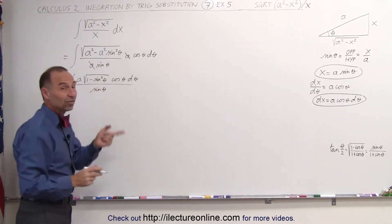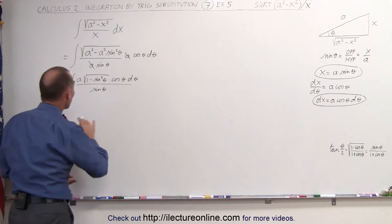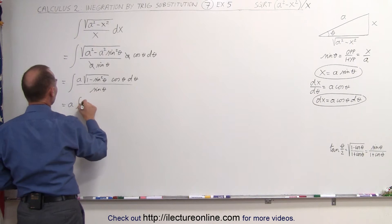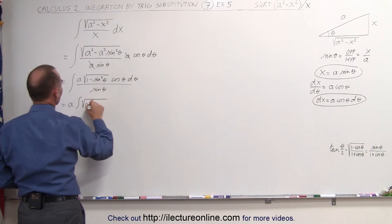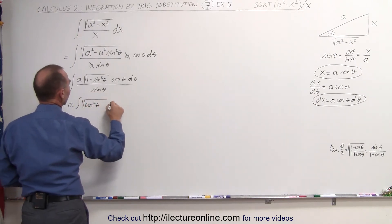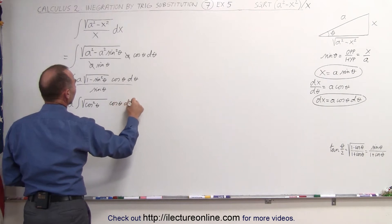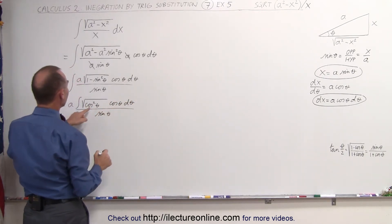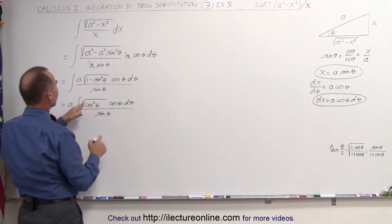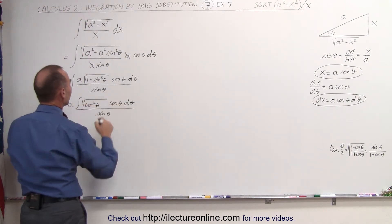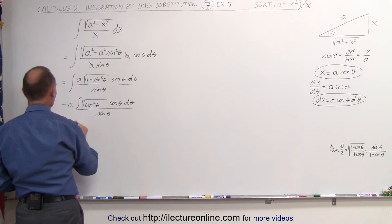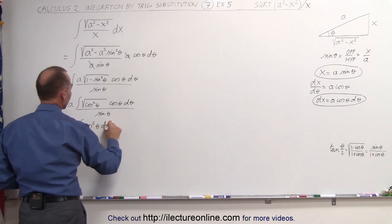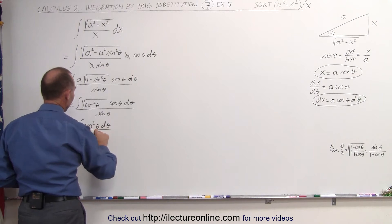In the numerator, we can rewrite this as the integral of a times the square root of one minus sine squared of theta, times the cosine of theta dθ, divided by the sine of theta. Then, one minus sine squared of theta can be written as cosine squared of theta. This gives us a times the integral of the square root of cosine squared of theta, times cosine of theta dθ, over sine of theta — which becomes a times the integral of cosine squared of theta dθ divided by sine of theta.